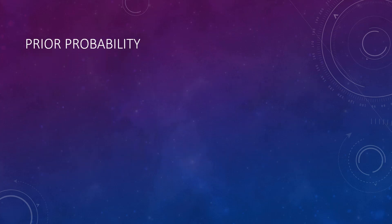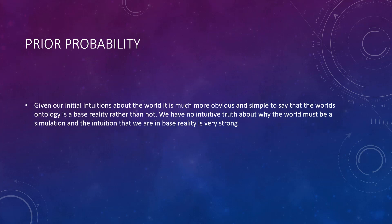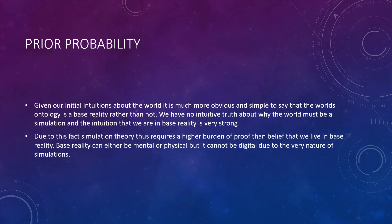I also want to bring out the prior probability. Given that our initial intuition is about the world, it is much more obvious and simple to say that the world's ontology is a base reality rather than not. We have no intuitive truth about why the world must be a simulation, and the intuition that we are in a base reality is very strong. Due to this fact, simulation theory thus requires a higher burden of proof than belief that we live in a base reality. Base reality can either be mental or physical, but it cannot be digital due to the very nature of simulations.